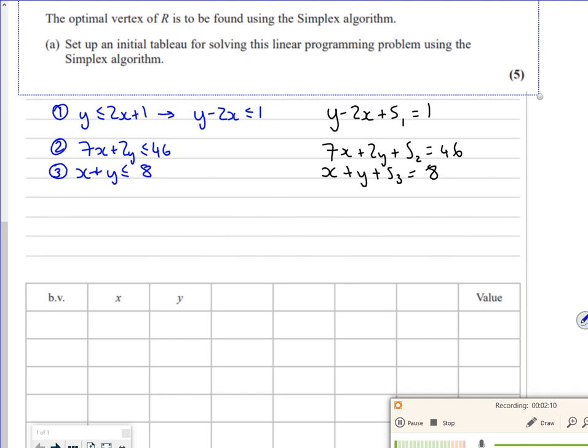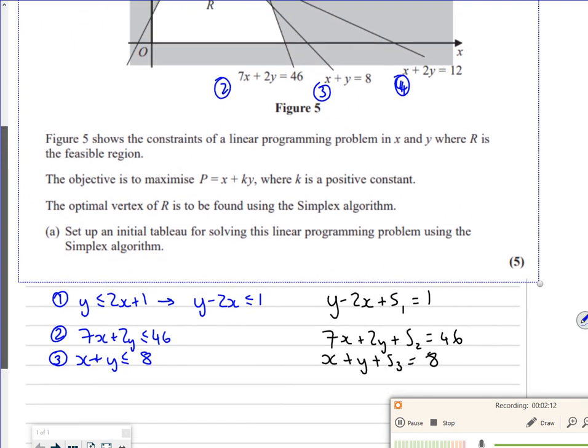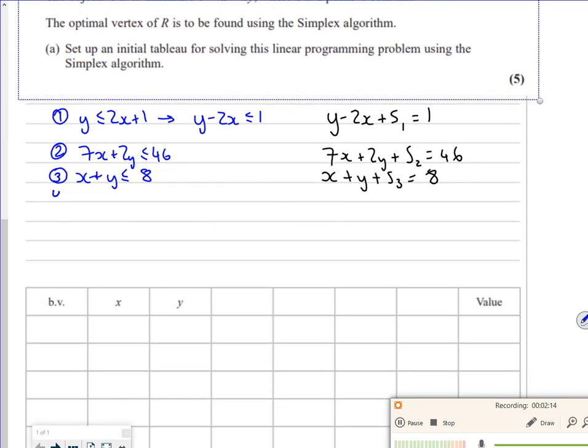And then the last one I had was x plus 2y is less than or equal to 12, which gave x plus 2y plus s4 is equal to 12.